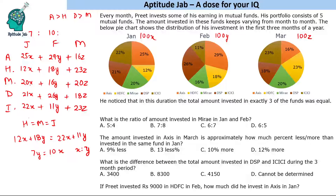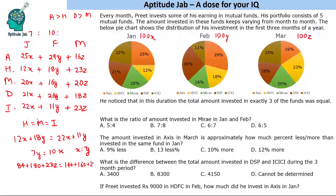Now let us also equate H with M and find z. Taking x = 7 and y = 10: H value = 12×7 + 18×10 + 23z = 84 + 180 + 23z. M value = 20×7 + 16×10 + 20z = 140 + 160 + 20z. Setting H equal to M: 264 + 23z = 300 + 20z, so 3z = 36, giving z = 12. Therefore the ratio x : y : z = 7 : 10 : 12.